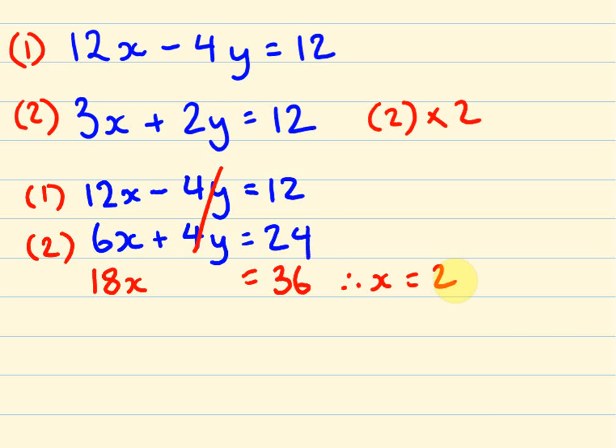How'd you go with that? Now, to work y out, what we do once again is we substitute this 2 into our equations for x. So 12 times 2 is 24, 24 - 4y = 12.